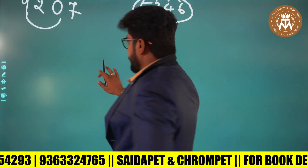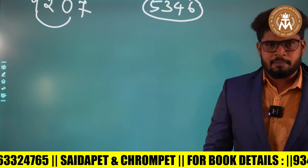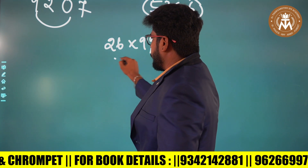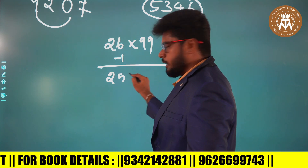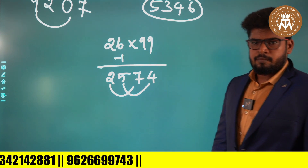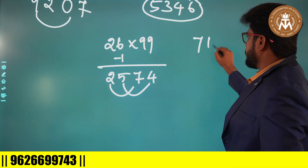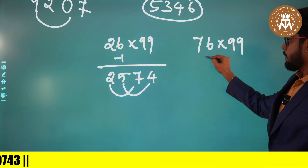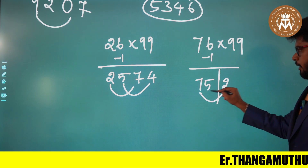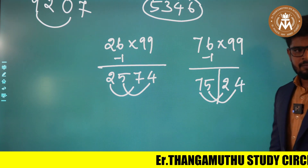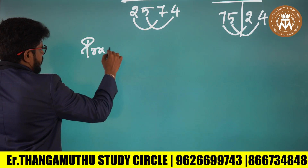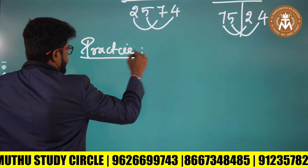Please keep going forward. If you have any number, you can use this method. For example, let's say 26 into 95. This is the two-digit number. Now you can do this for your practice question. 2-digit number. If you have 3 digits, you can do this for your practice question as well.